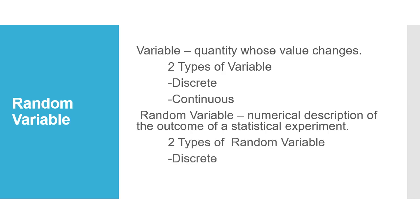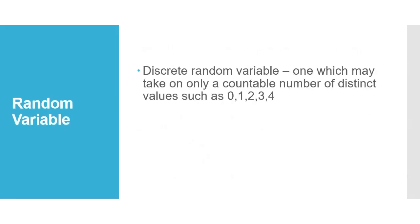There are two types of random variable: discrete random variable and continuous random variable. Discrete random variable is one which may take only a countable number of distinct values such as 0, 1, 2, 3, 4, and so on. So a discrete random variable only takes whole numbers — it is the number of outcomes you expect from a statistical experiment, and you cannot have decimals in it.